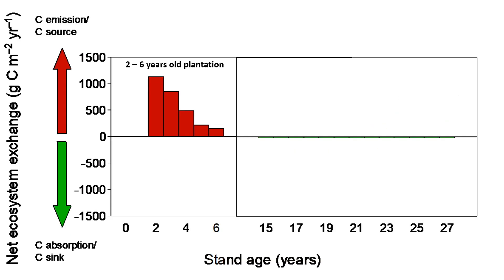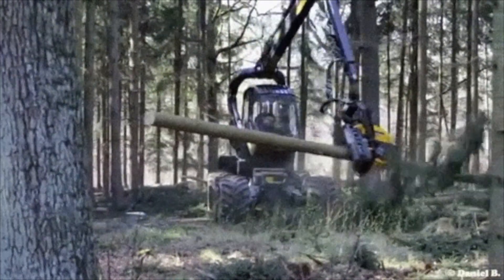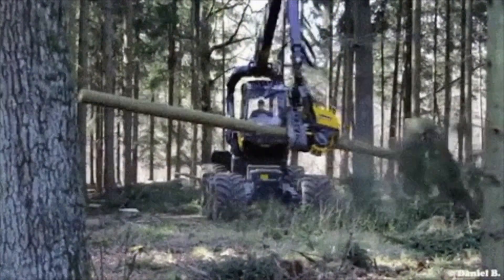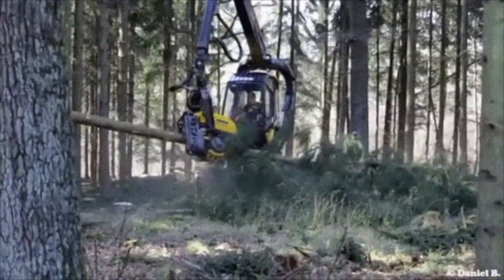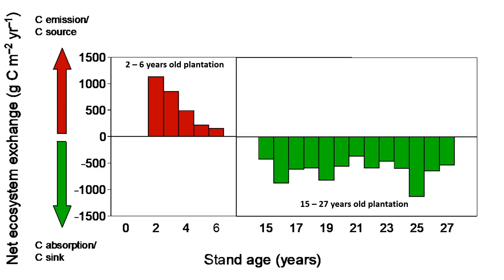Our results show that forest harvesting causes large sustained losses of carbon to the atmosphere, making the forest a strong carbon emitter as we observed in the newly established pine plantation. This is mainly due to the large amount of woody detritus left on site after harvest that subsequently decomposes. However, the rotation-aged site was a net carbon sink throughout the measurement period, owing to a larger photosynthetic productivity than the ecosystem respiration.